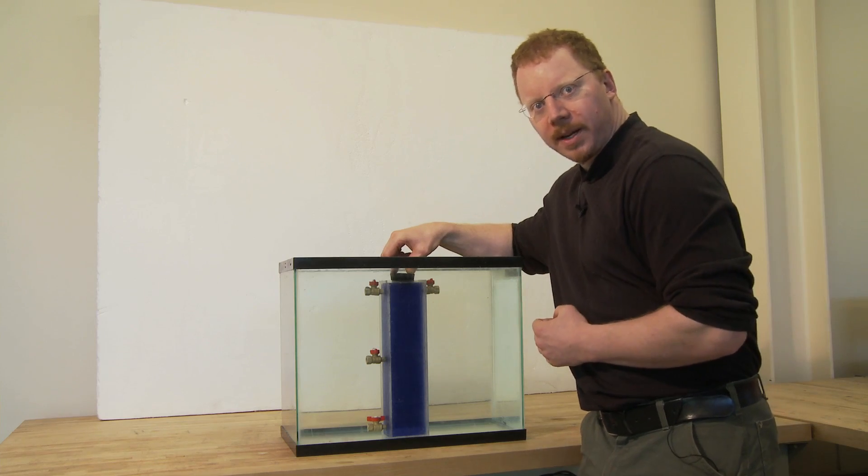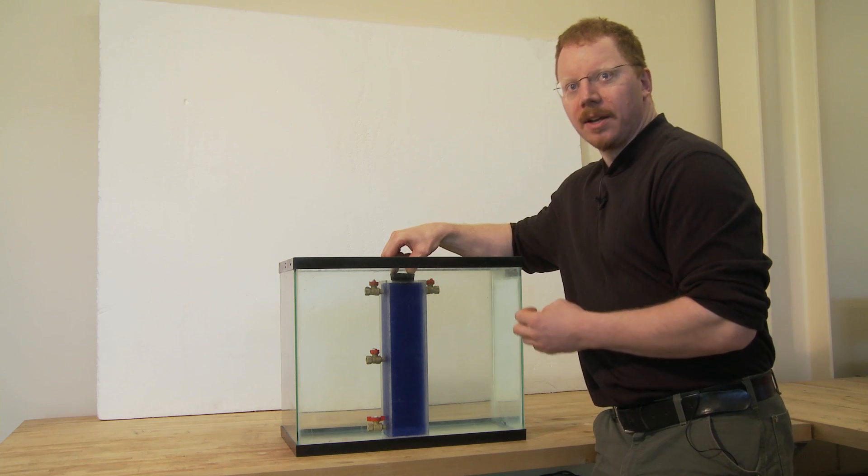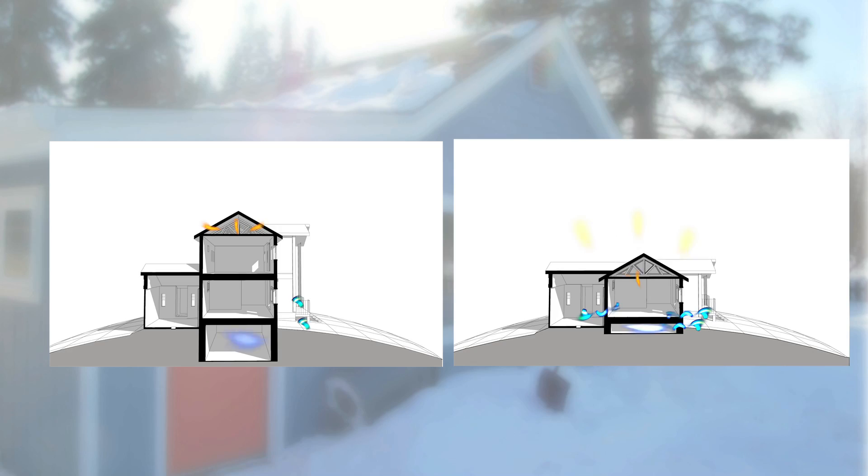And this is really, really important when it comes to stack effect. The greater the distance between the holes, the greater your air leakage rate will be. So if you've got a three-story house and a hole down low at the foundation and a hole up in the attic, your air leakage is going to be much more aggressive than it would be in a single-story house.